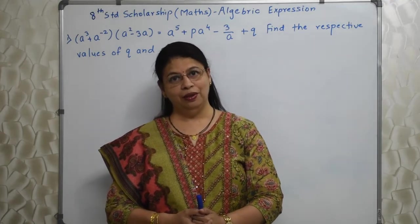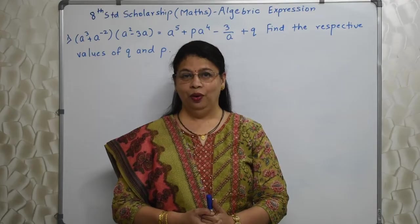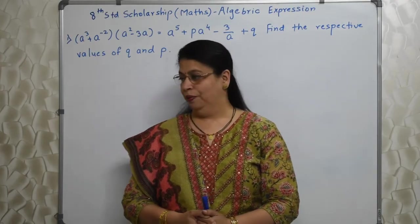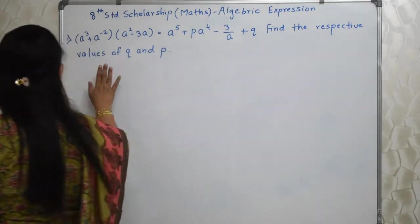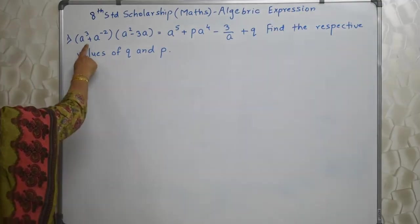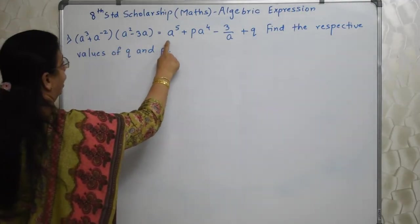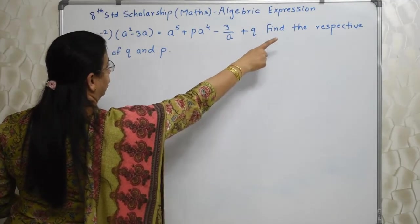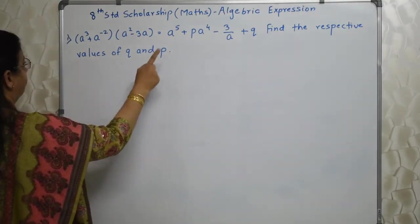Value, Addition, Subtraction, Multiplication and Division. So let's start. I have written the first sum here. They have given these two terms and they have given the expansion. Find the respective values of Q and P.